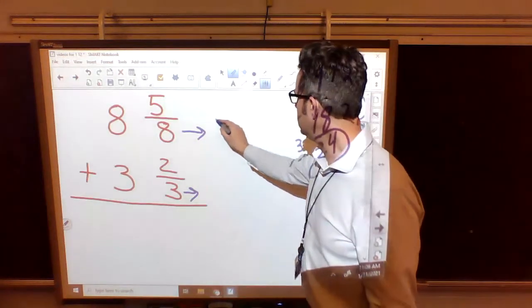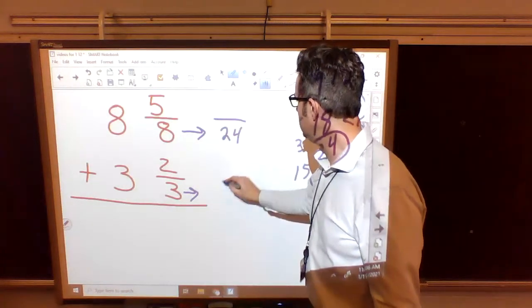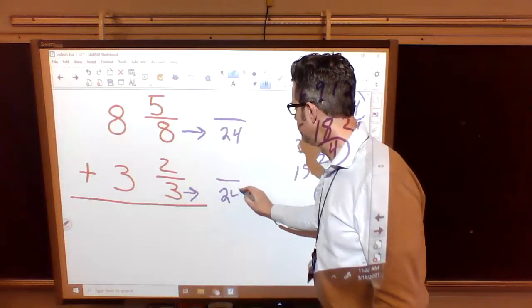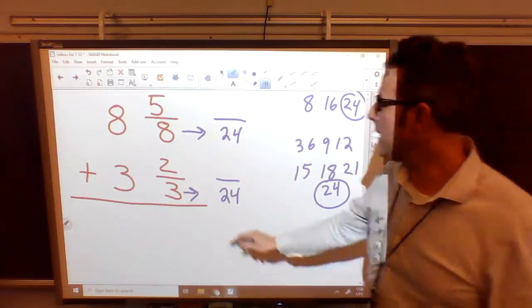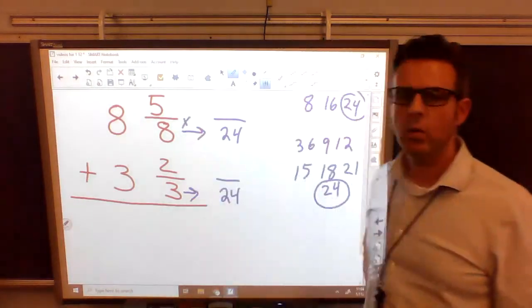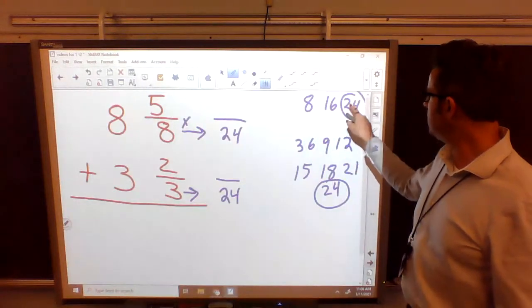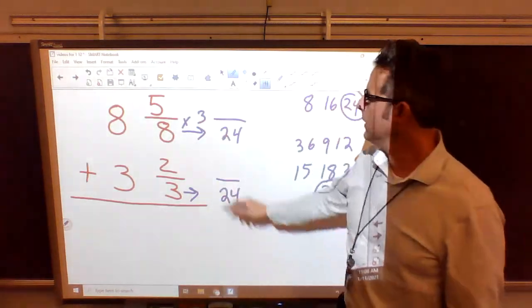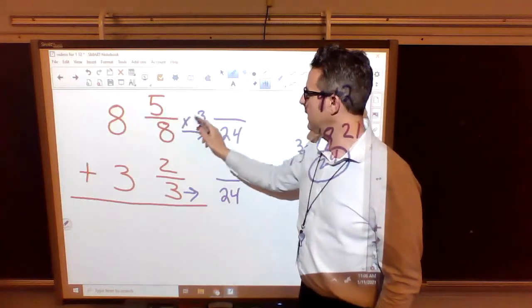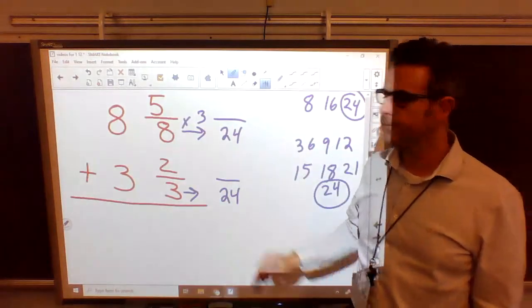How do we get from 8 to 24 by multiplying? 8 times what is 24? Well, look up here. It took 3 of them. 8 times 3 is 24. So we have to do the top number. 5 times 3. What is 5 times 3? 15.